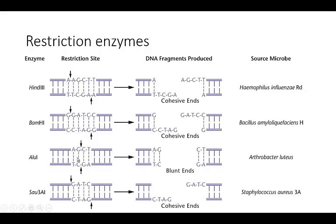Some restriction enzymes will cut with blunt ends and not necessarily with the sticky ends or cohesive ends. But ideally, when you're doing these types of restriction reactions in the lab, you're going to select something that will give you sticky ends, because it's going to make your cloning much easier.